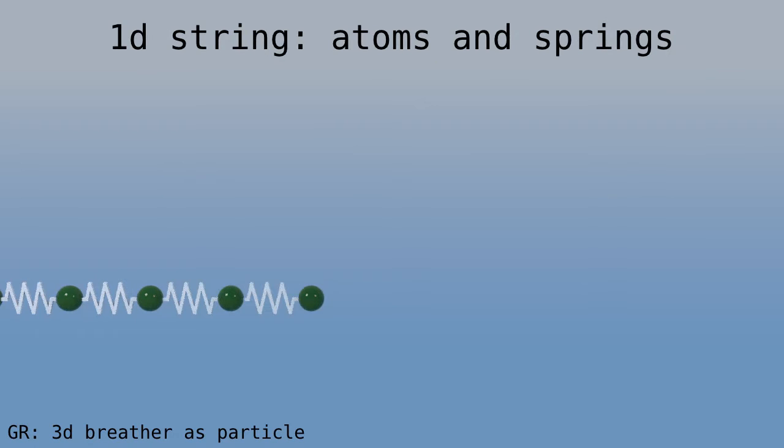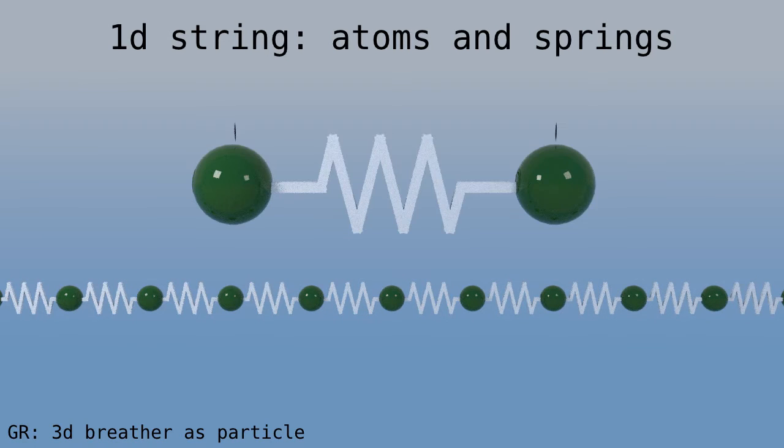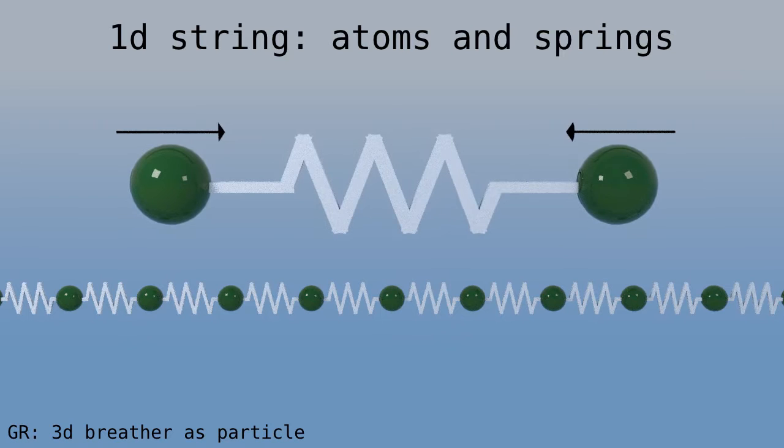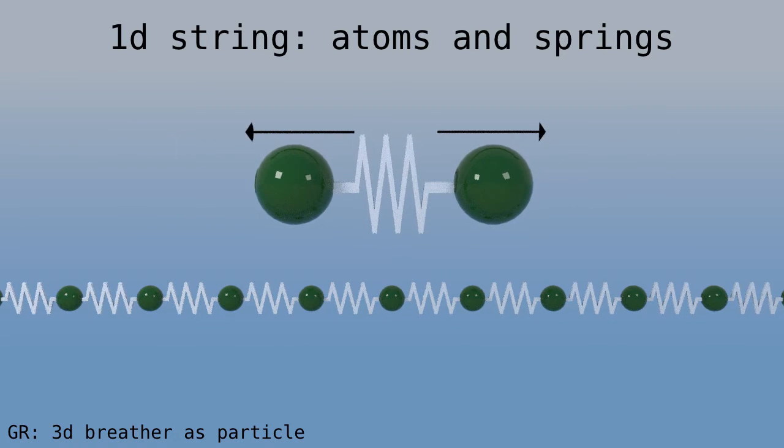First, let's think about what it means to be a particle in spacetime. We'll do so by going back to the breather from the second video. We can think of a one-dimensional string as being made of atoms. Two neighboring atoms are attached by a spring. The spring has a natural length. If we stretch it, it tries to pull the atoms back together. If we compress the spring, it tries to push the atoms apart.